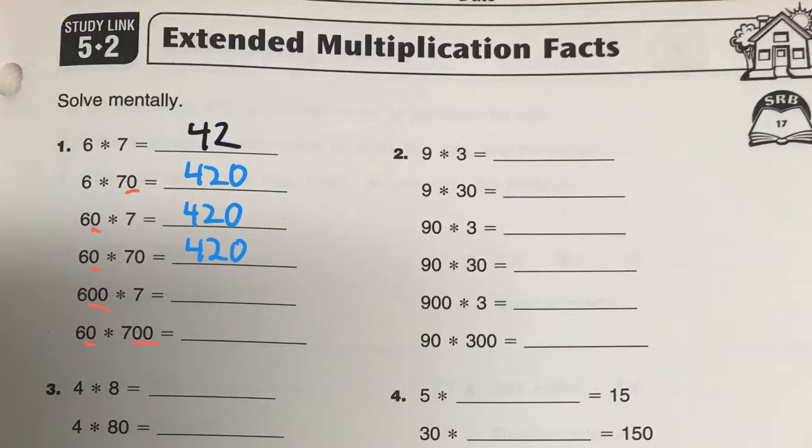60 times 70, you have 2 zeros to add. Again, only 2 zeros to add here. But now you've got 60 times 700 with 3 zeros to add. So the next 2 should be pretty simple after you've got the idea down.